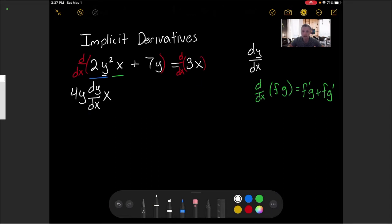Multiplied by the second is just an x. And then we'll do plus. We'll leave the first function alone, that's 2y². And then taking the derivative of the second, which is the x, that will just be a 1. And so we'll just leave that as 2y².